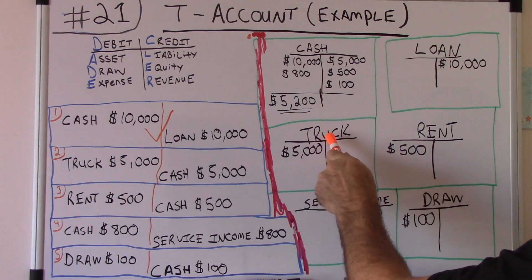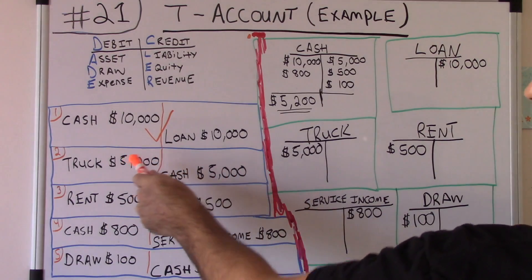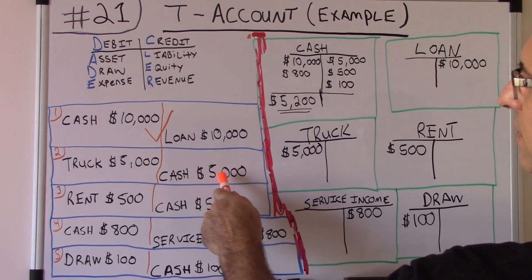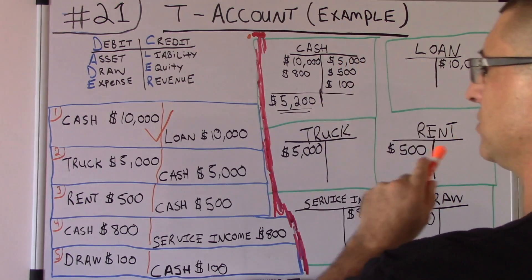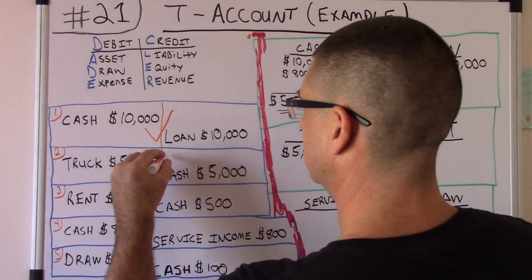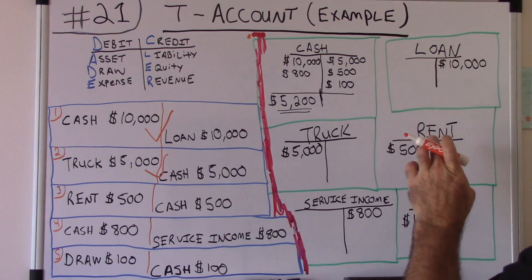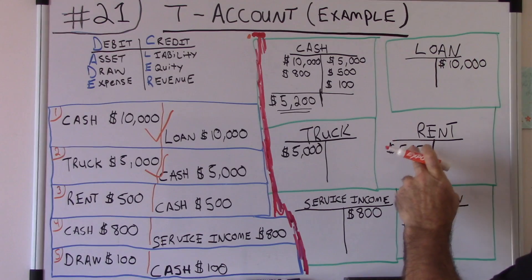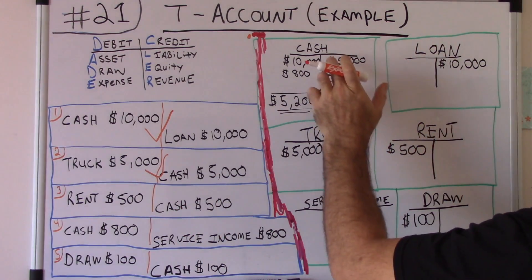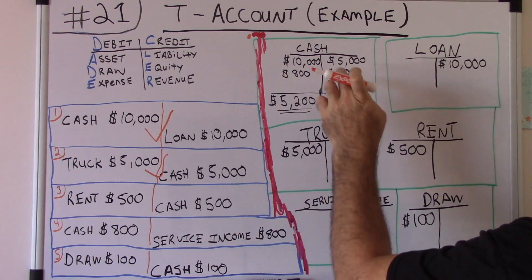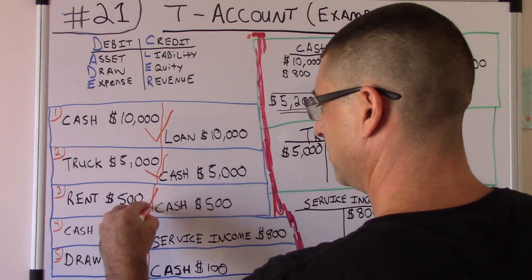Second journal entry: debit truck for 5,000 — we go to the truck account and enter a debit for 5,000. The credit for that is cash 5,000, so we go to the cash account and credit 5,000. Second journal entry done. Third journal entry: debit rent for 500 — we go to the rent t-account and enter a debit for 500. The credit is cash 500 — we go to the cash account and credit 500. Three journal entries t-accounted.